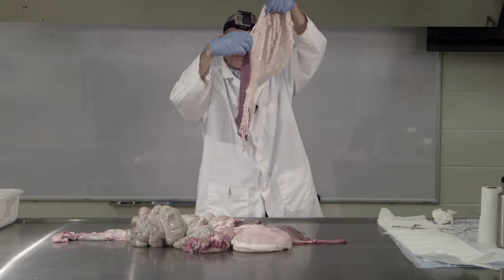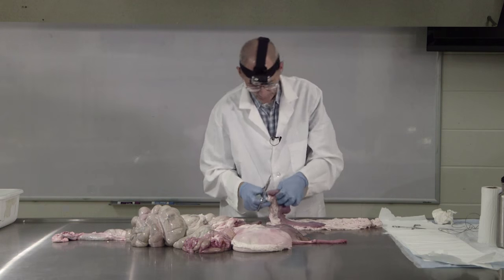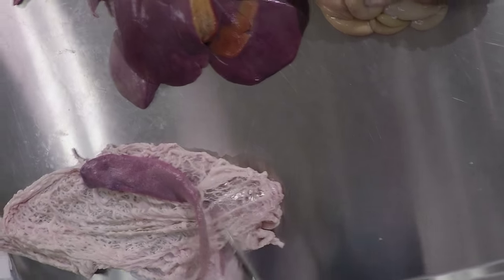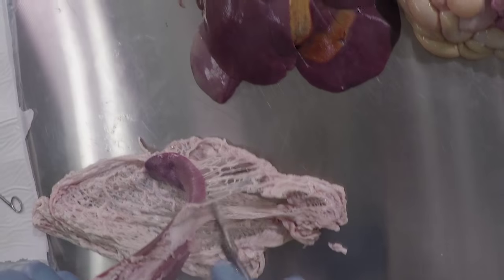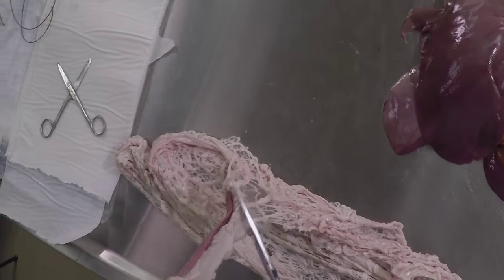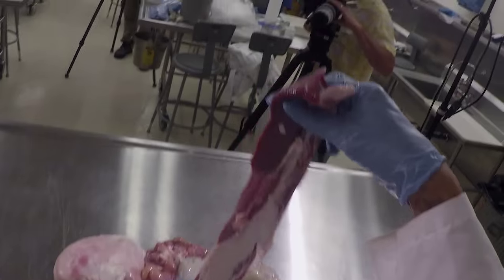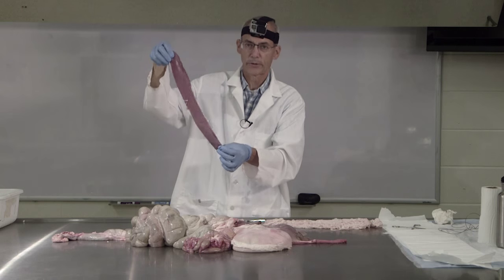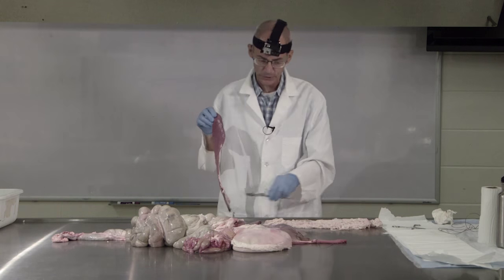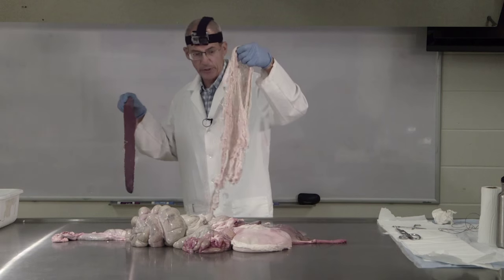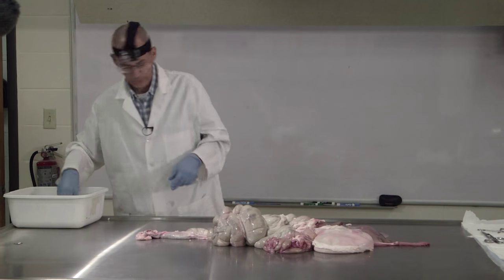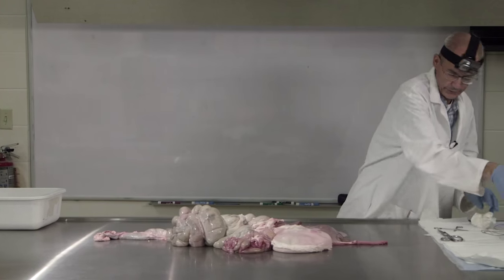There's another structure associated with the omentum: the spleen. The spleen doesn't serve any digestive function. The spleen is a source for production of blood cells — particularly white blood cells from the immune system, including macrophages and other white blood cells involved in combating infection. It's really part of the animal's immune system much more so than the digestive system. So we have the spleen and the omentum both associated with the stomach.